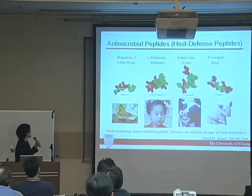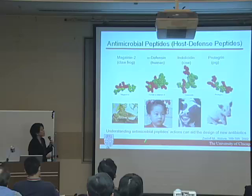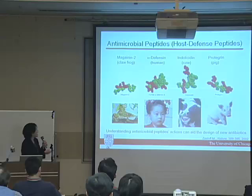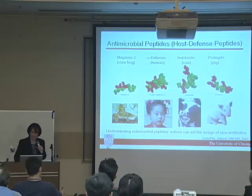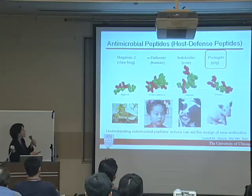They exist in a lot of living creatures. Magainin — maybe something that you've heard about — is from the skin of the clawed frog. In humans, we have in our immune system LL-37, or defensin. Cows have their own interleukin, and today I'm going to focus on one that is actually isolated from pigs, which is called protegrin. The common coding in this structure of the peptide has to do with part of it being hydrophobic and part of it being hydrophilic.